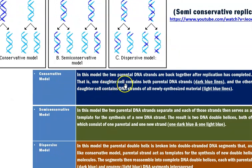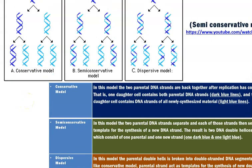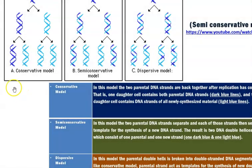In the conservative model, one daughter cell contains both parental strands, shown in dark blue color lines — this daughter cell entirely receives the parental DNA strand. The other daughter cell receives the DNA strands newly synthesized during replication, shown in light blue color lines. After replication, the parental strand is completely conserved in one daughter cell and the newly synthesized strand is conserved in the other daughter cell.